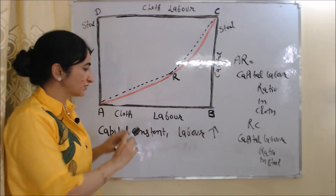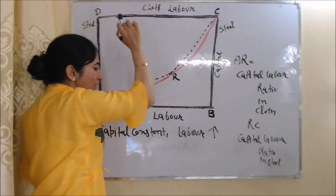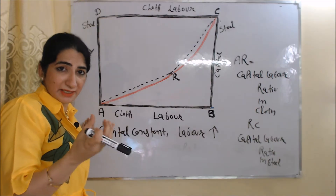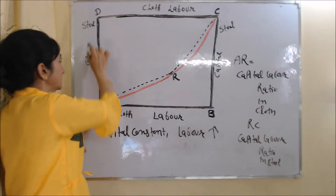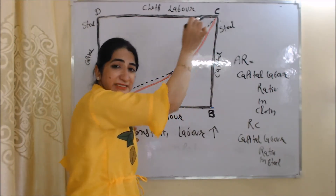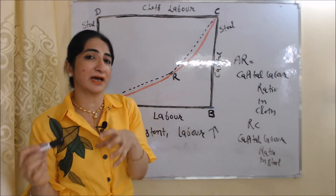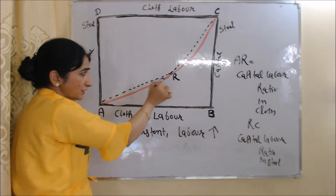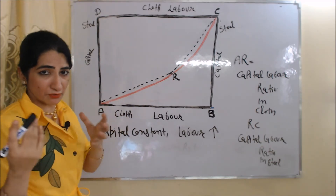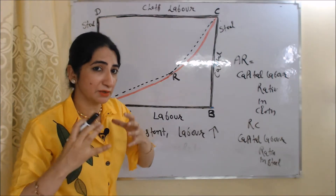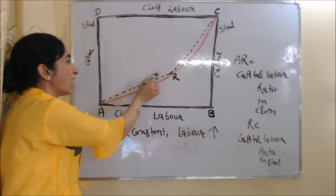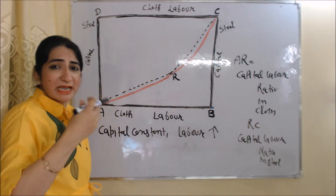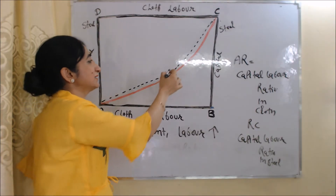In this diagram, on the x-axis — on the horizontal side AB and CD — we have labor and production of cloth, because cloth is a labor-intensive good and we use labor in larger amount. On the vertical side, BC and AD, we have capital and production of steel, because steel is a capital-intensive good. The red line AC is our contract curve. The AR dotted line represents the capital-labor ratio in production of cloth, and the RC dotted line represents the capital-labor ratio in production of steel.